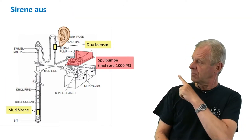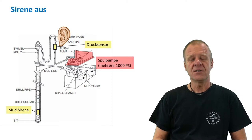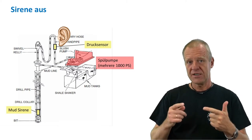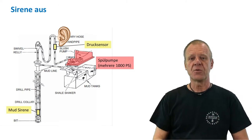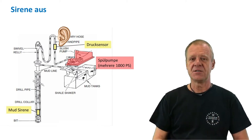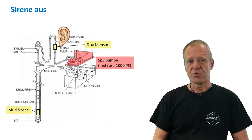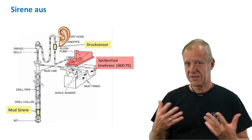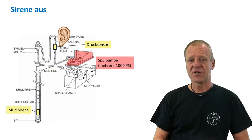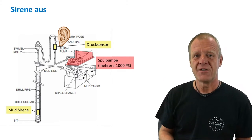In the standpipe, where the pressure sensor sits, this sensor receives the data coming from the downhole siren. And we are very close to the big mud pumps, which are driven by several thousand horsepower. These pumps generate a lot of hydraulic noise in the pipeline. If you listen closely, you will hear them.